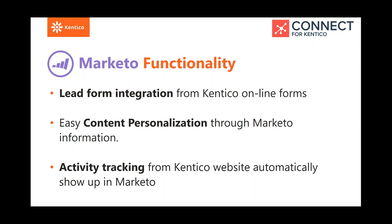The second use case is content personalization. Once we have leads inside Marketo, we can use attributes like name, company, annual revenue, or location — and bring that information back into our Kentico instance to set up personalization variants and use macros as if that data was actually in Kentico itself. Third, we'll show how you can use Marketo's activity tracking to take website activity — page views, downloads, and things like that — and get that into Marketo, linking that activity with the lead in Marketo.